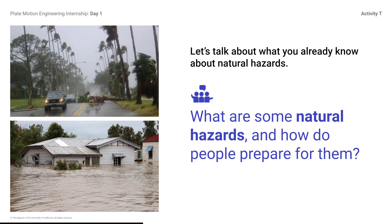Other natural disasters, such as earthquakes, give little to no warning. Some examples of geohazards engineering projects include slope stabilization to prevent rock slides, earthquake retrofitting to prevent building damage during an earthquake, or warning systems such as a tornado or tsunami warning system.